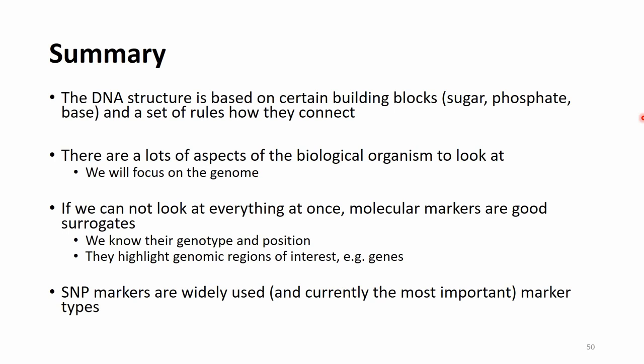We mentioned that genotyping and whole genome sequencing became much more affordable due to the genomic revolution. Still, if we don't want to look at the whole genome, molecular markers are good surrogates. For molecular markers it is very important that we know their genotype and position on the genome — they highlight genomic regions of interest such as genes. We will be focusing on single nucleotide polymorphism (SNP) markers, which are widely used and currently the most important marker types.